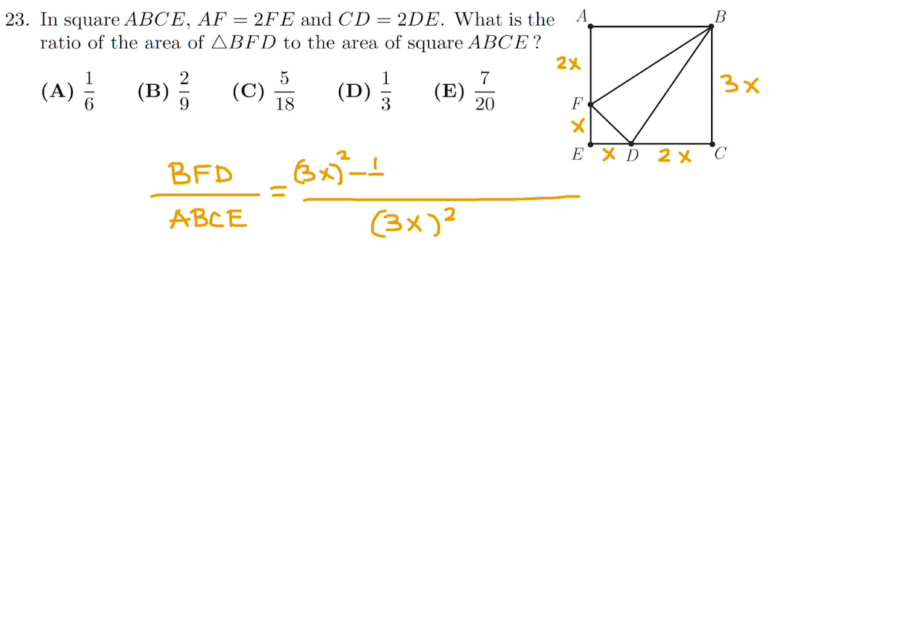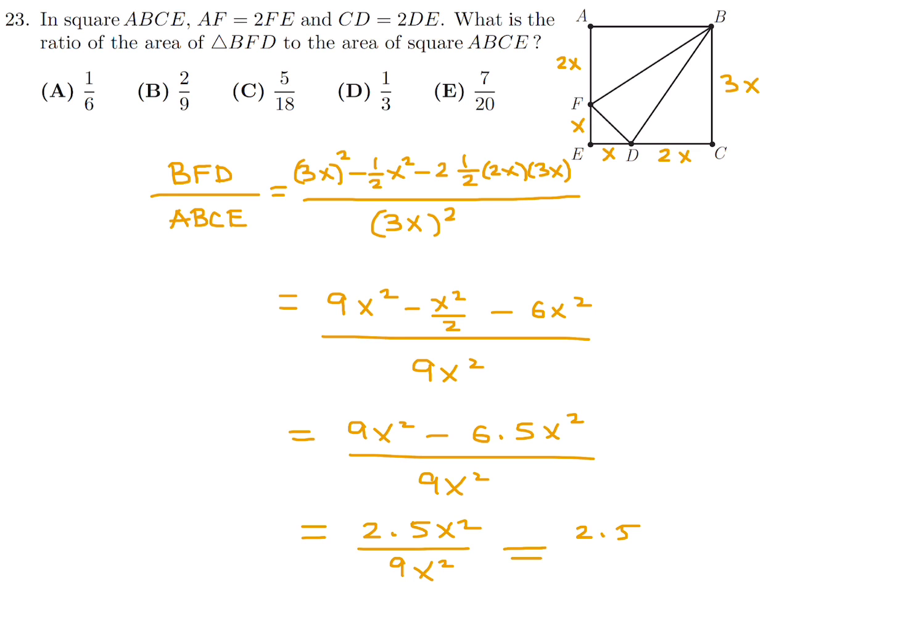Subtracting the very smallest one, it's 1 half base times height, which is X times X. Then subtract 2 times this guy, because that is the exact same dimensions. So 2 times 1 half base, 2X, times height, which is 3X. So this is my formula. So this becomes 9X squared minus X squared over 2. And this looks like 6X squared all over 9X squared. So this looks like 9X squared minus 6.5X squared. And that top becomes 2.5X squared all over 9X squared. The X squareds cancel, and I get just 2.5 over 9. Multiply top and bottom by 2, and you get 5 over 18. There you go. Number 23, the answer is C.